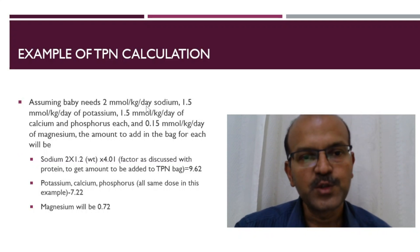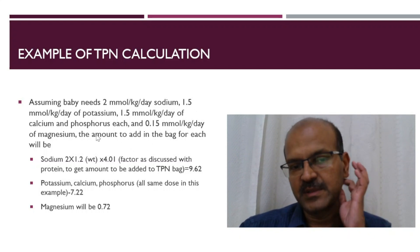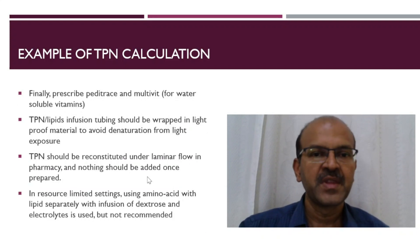Assuming the baby needs 2 millimoles per kg per day of sodium, 1.5 millimoles per kg per day of potassium, and 1.5 millimoles of calcium and phosphorous each. The magnesium is 0.15 millimoles usually, and this is how we calculate how much will be added of each of these electrolytes.